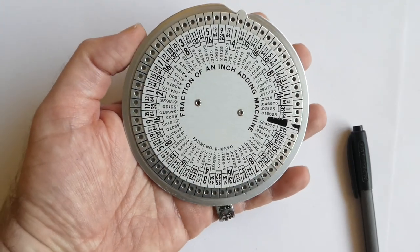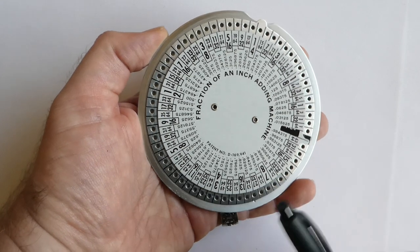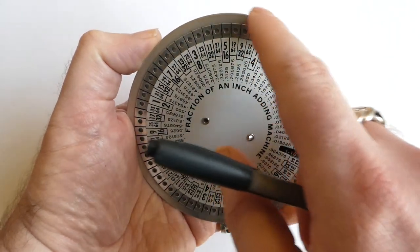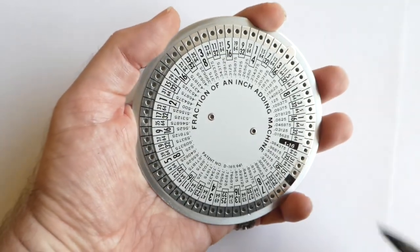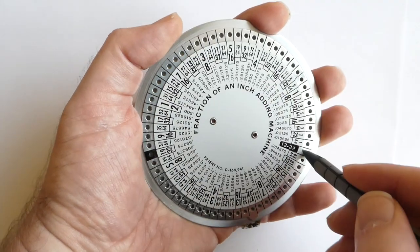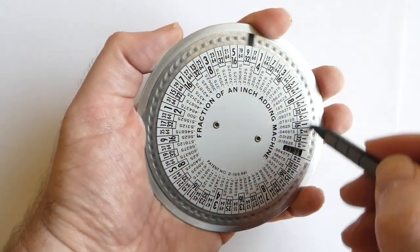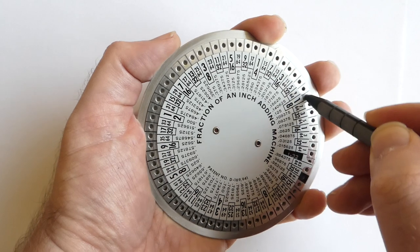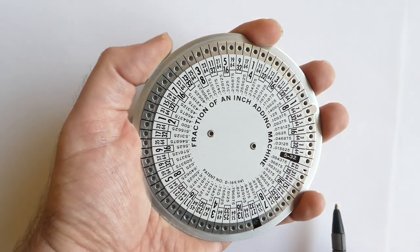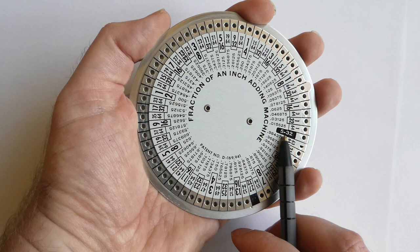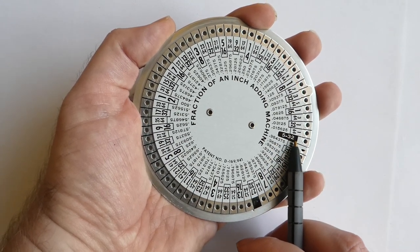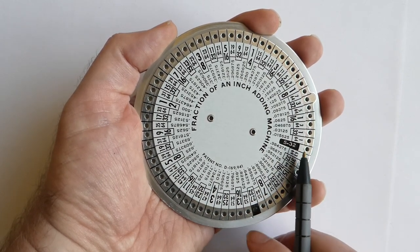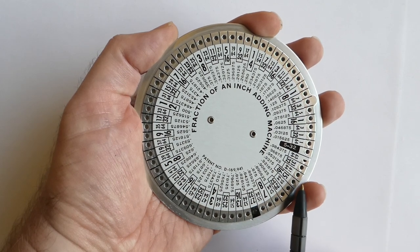It does have one small extra feature, which is this here - it has a lip on the moving ring, and a gap here where you can put your finger. So what happens is if you add certain fractions and they add up to something that's more than one inch, you can then feel that tab going past your finger. That way you know that whatever number it says here, 5/32nds, that that is not the real answer - that you have to add one whole inch to that to get the right answer.